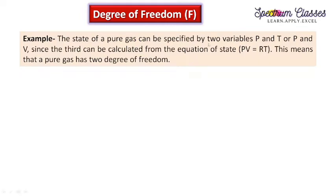The state of a pure gas can be specified by 2 variables — either pressure and temperature, or pressure and volume — since the third can be calculated from the equation of state PV equals RT. This means a pure gas has 2 degrees of freedom. Out of one equation we can evaluate only one unknown variable, so fixing two allows us to evaluate the third.